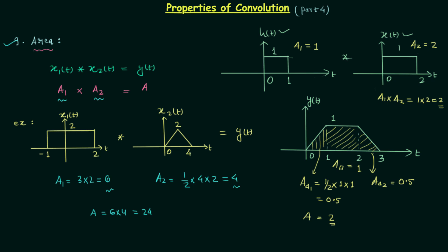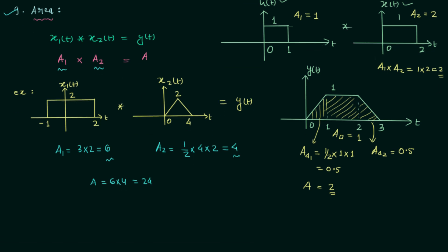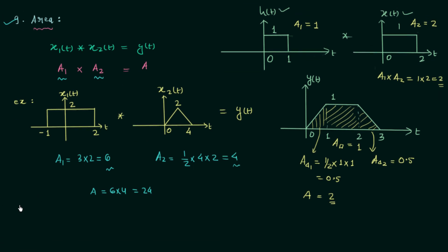Our calculation satisfies the area property of convolution, confirming we performed the convolution without any mistake. This is all for the property of area. Now we will move to the tenth property, which is the property of duration or extension.